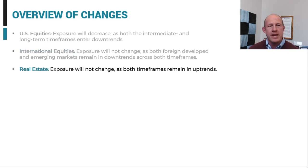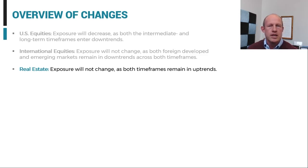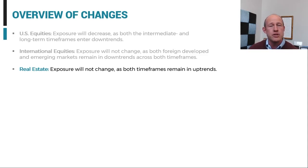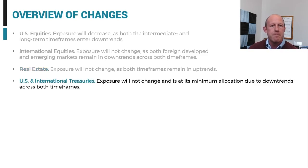Real estate remains, on a relative basis, the strongest asset class in the portfolio, with rising trends in both the intermediate term and the long term. Exposure there will remain unchanged. We are at our baseline allocation, which is near its maximum allocation, and that will remain unchanged going into May.